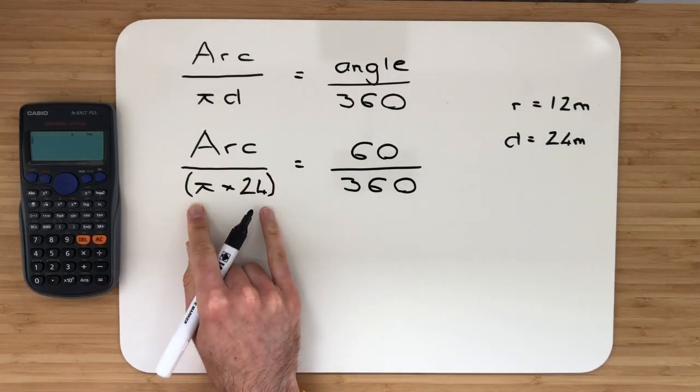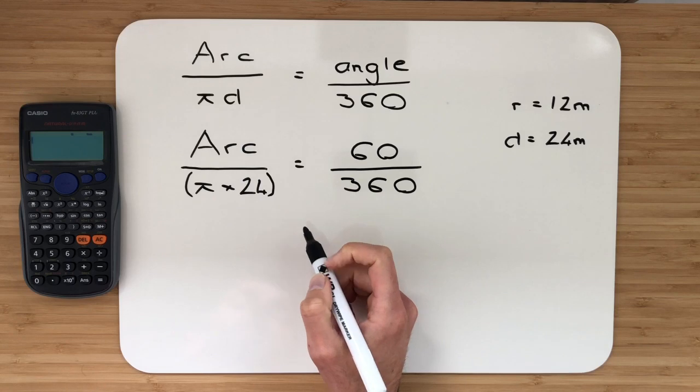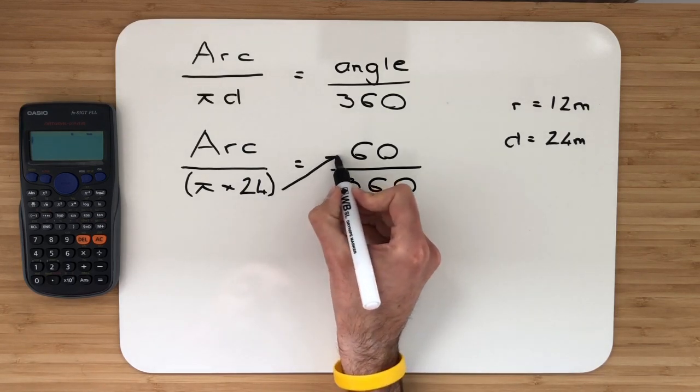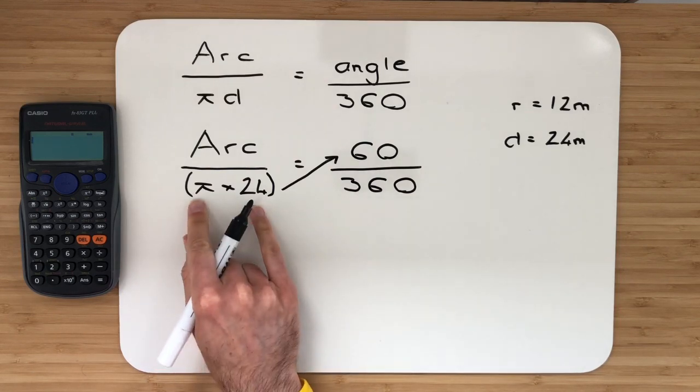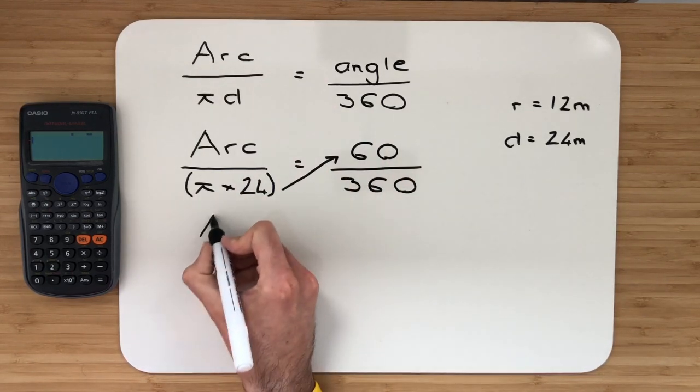Now, this is down the bottom of the fraction, so it's dividing. When it goes over to the opposite side, it will do the opposite operation, which means multiply. I'm going to put an arrow in like this. This, which is down the bottom dividing, is going to go over and multiply.